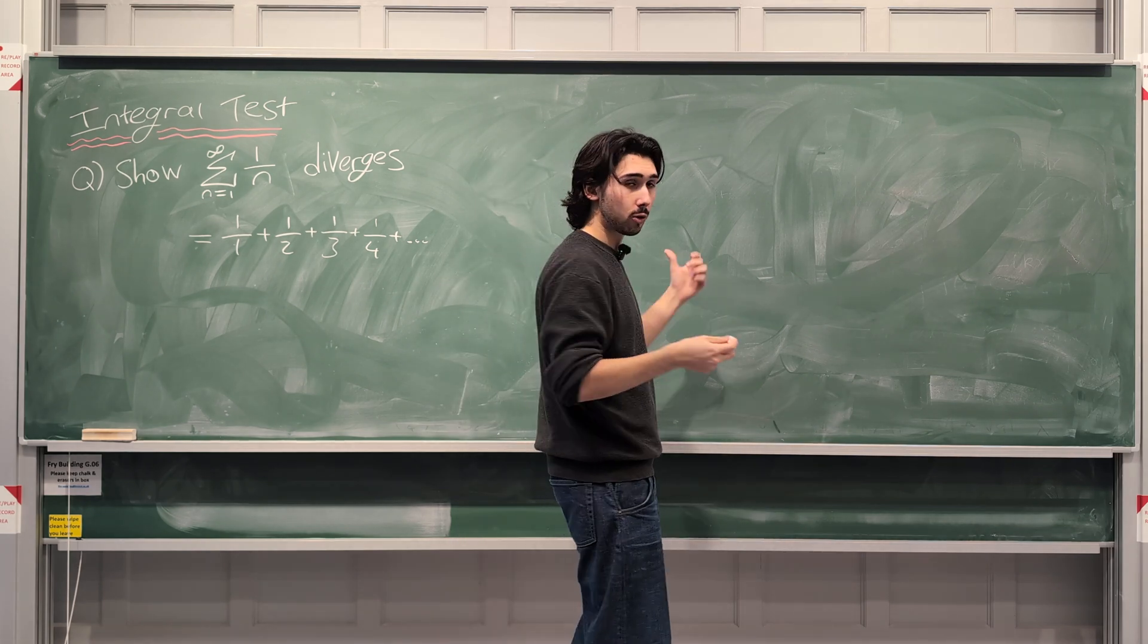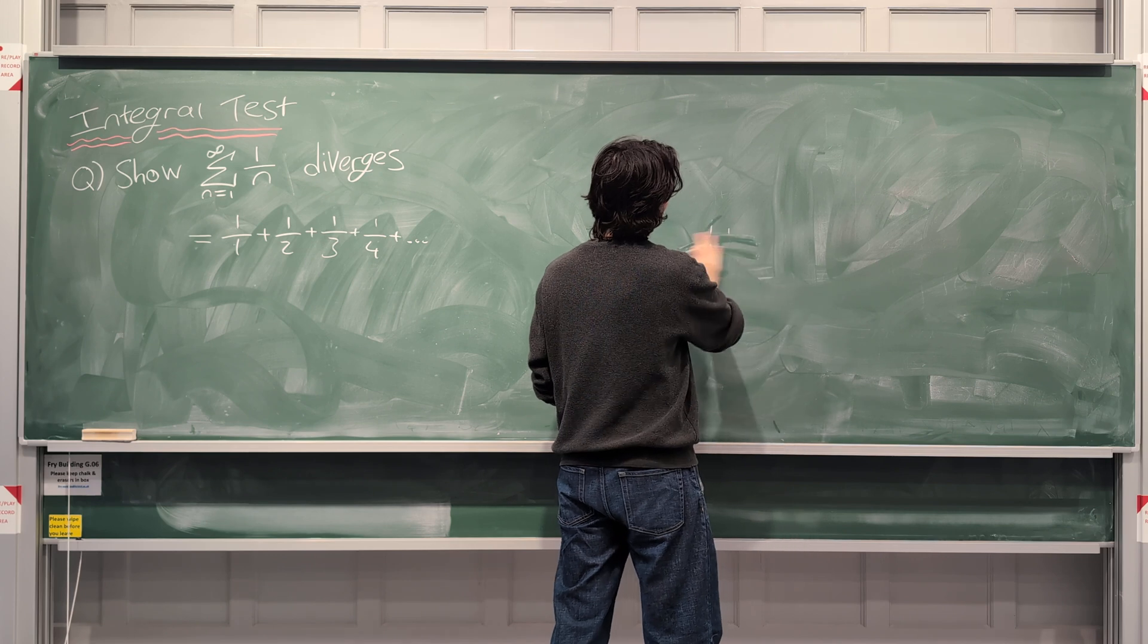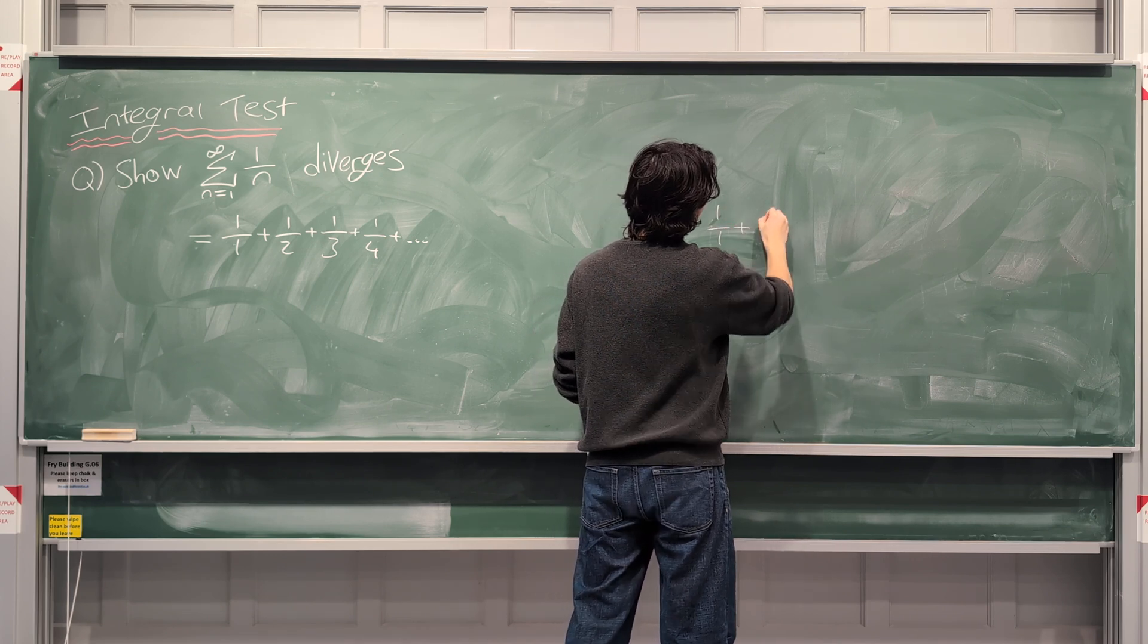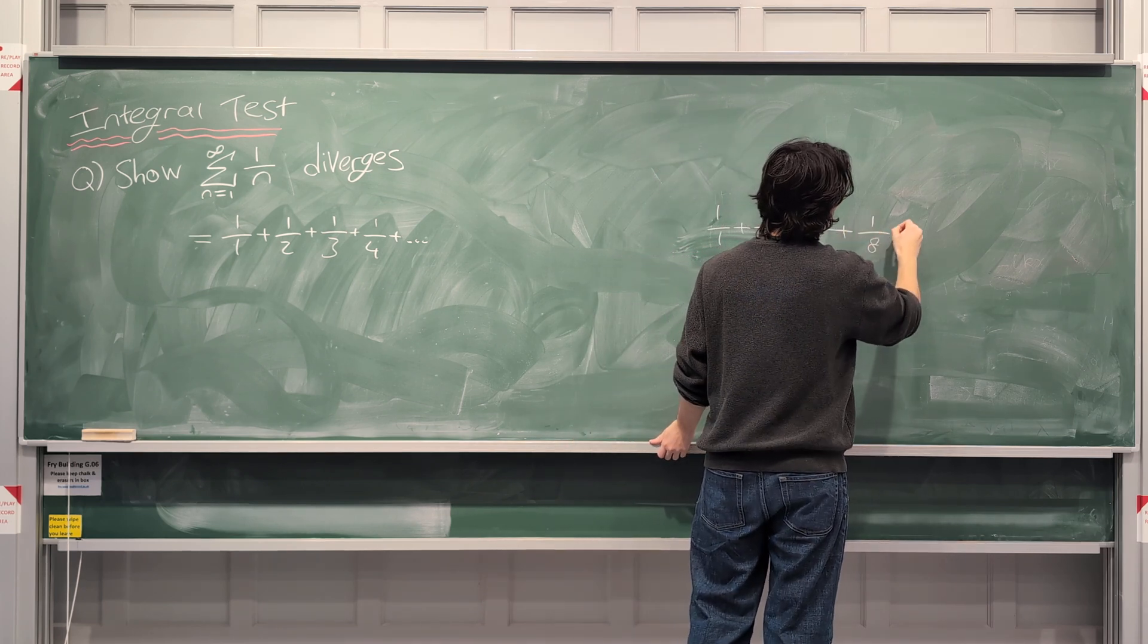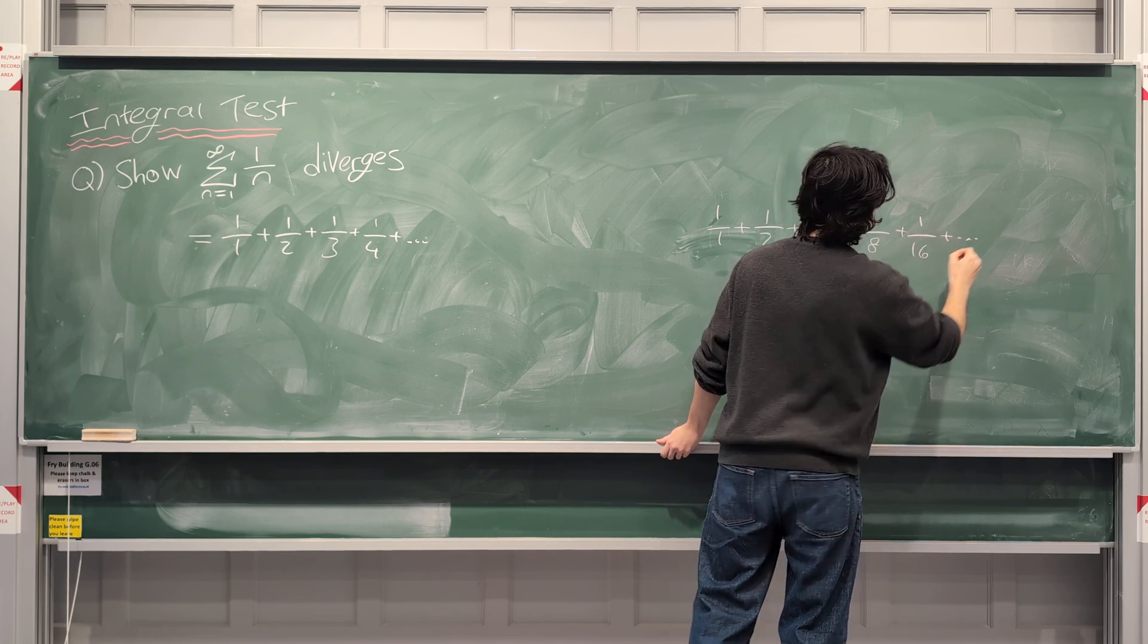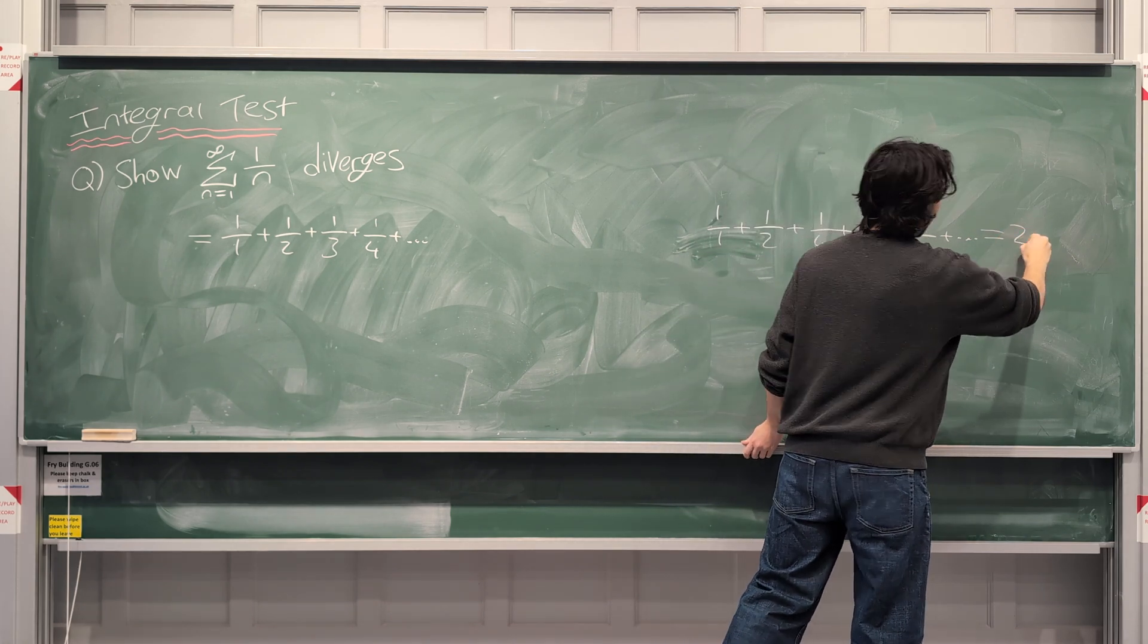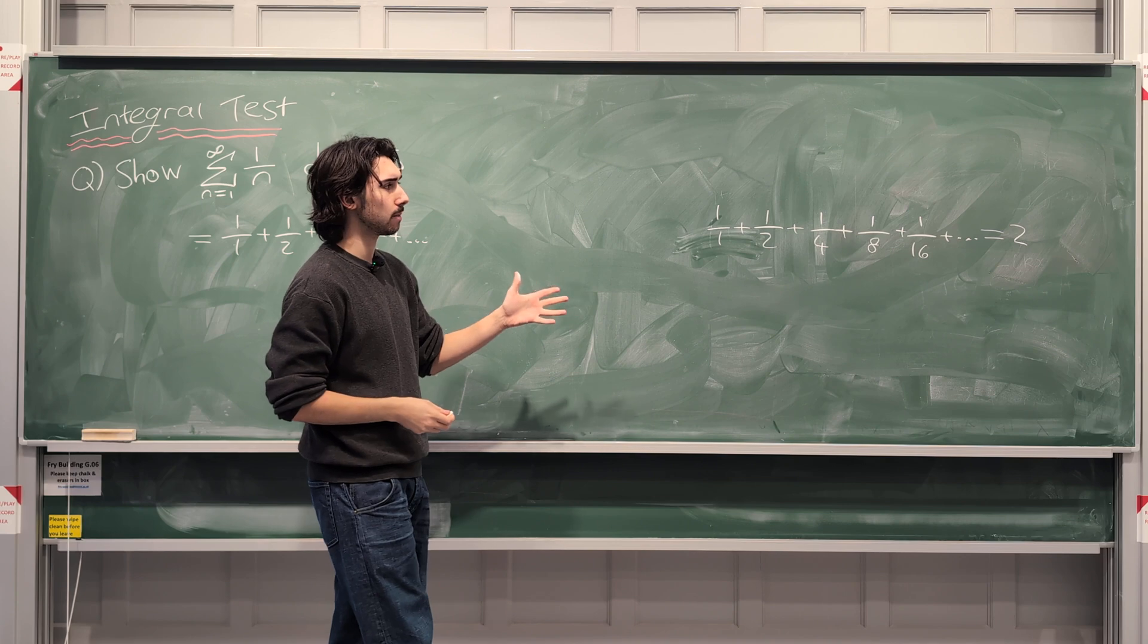So just to contrast with what I've written here, 1 over 1 plus 1 over 2 plus 1 over 4 plus 1 over 8 plus 1 over 16 and so on and so forth, this is actually just equal to 2 and it converges. It's the number 2 even though there are infinitely many terms.